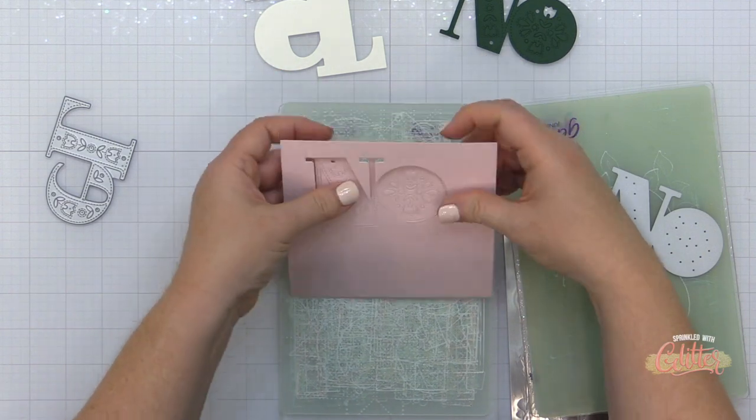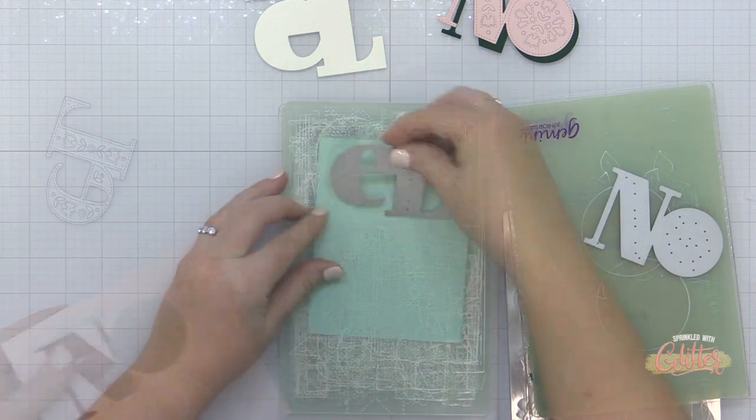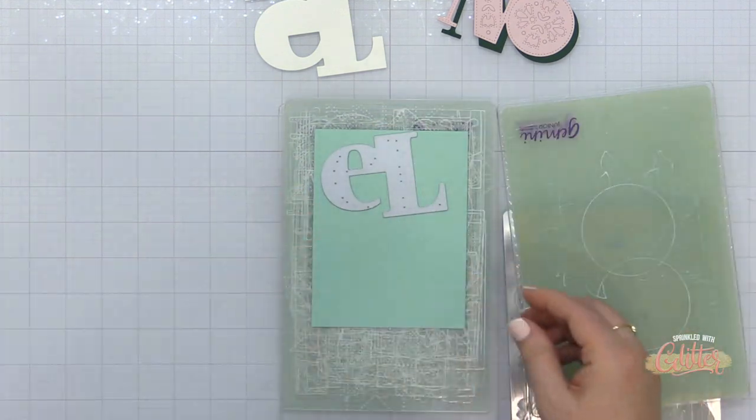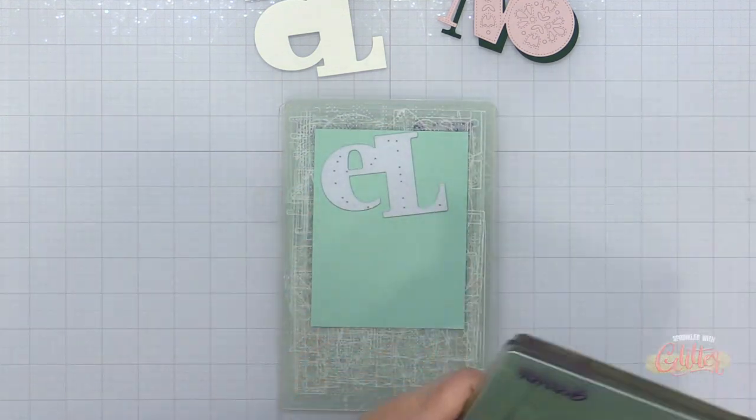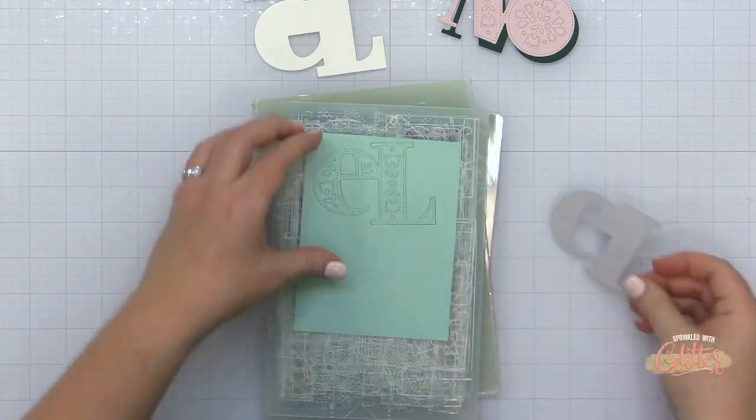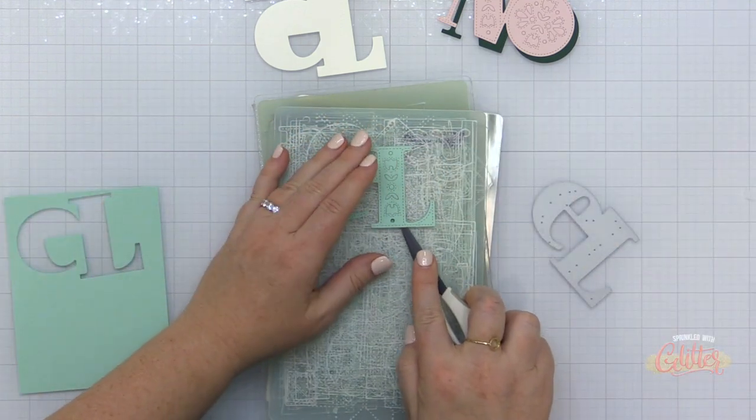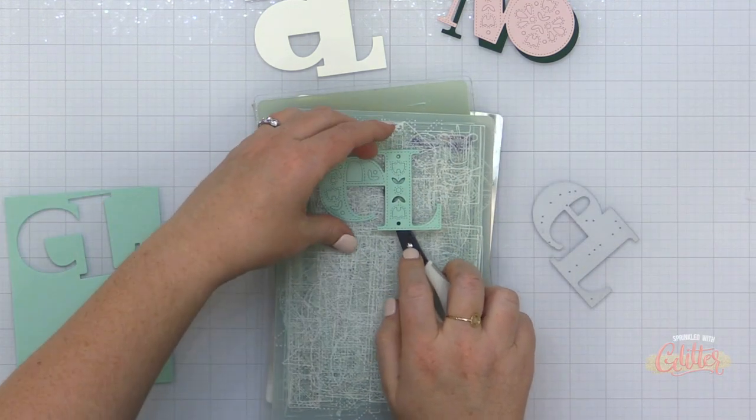I die cut the shadow or the base layer from Concord and 9th white cardstock twice, and I'm die cutting each of these colors of cardstock just once. You can see the N and the O are a single die cut, and the E and the L are a single die cut, because this is really a stacked up die cut.